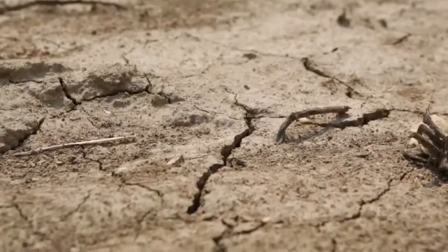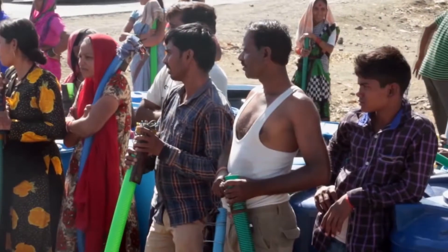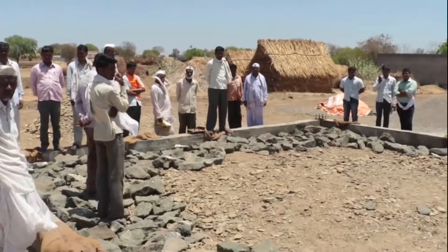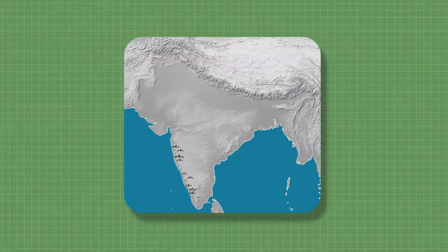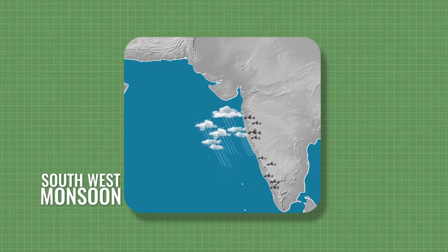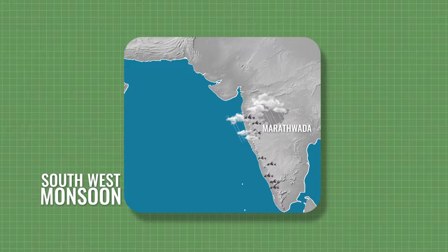According to a study by the Indian Institute of Tropical Meteorology and the Indian Institute of Science, between 1870 and 2015, the Marathwada region faced 22 droughts. The rest of Maharashtra receives heavy rain, but this region is under the influence of the South-West monsoon. When the rains hit the coast, massive rainfall occurs over the coastal regions. Then the Western Ghats prevent the monsoon from moving inwards, and so rainfall decreases from west to east. By the time it reaches the Marathwada region, the average rainfall becomes 750 millimetres.